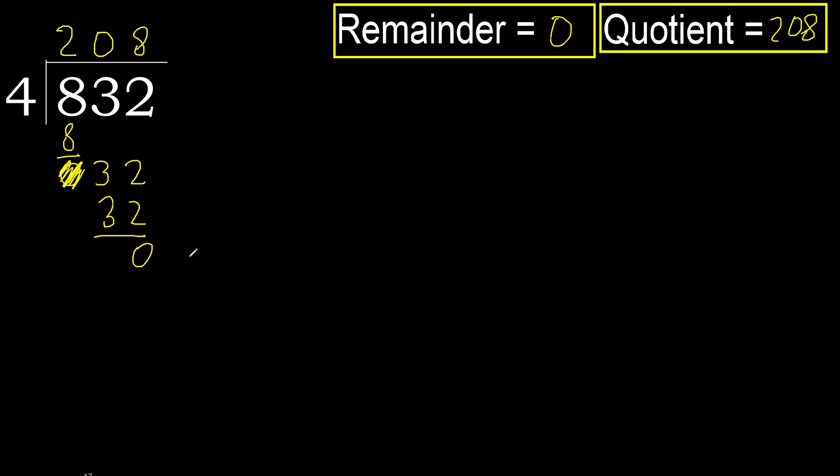Ok, 0 — therefore 832 divided by 4 is 208.